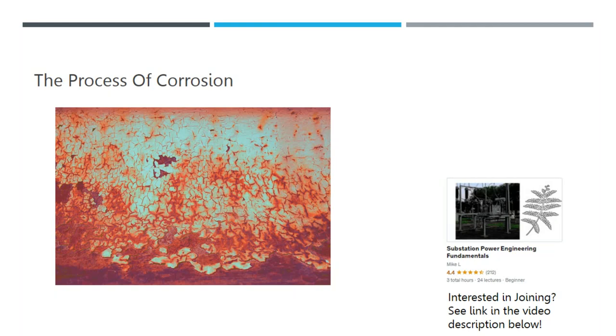Metal corrosion is a result of electrochemistry. In other words, it is an electrical circuit in which a portion of the circuit's chemical reactions are the means by which electrons are exchanged, generating electricity. These chemical processes take place on the metal surface where it is in contact with the electrolyte. Oxidation reactions, or corrosion, occur at the surface of the anode.